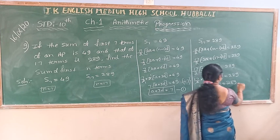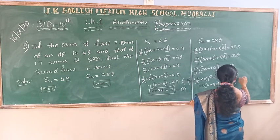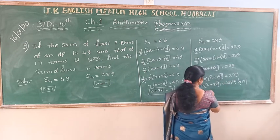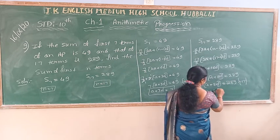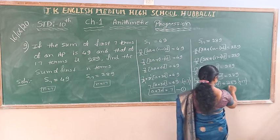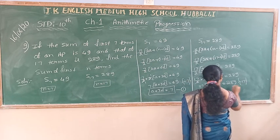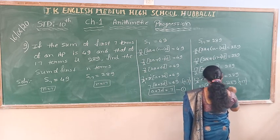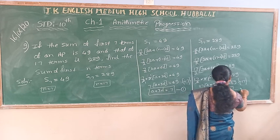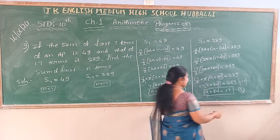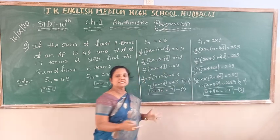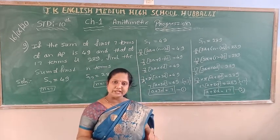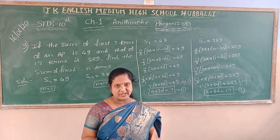So both sides are divided by 17, giving A plus 8D is equal to 289 divided by 17, which is 17. Call this equation number 2. Now I am going to solve this two-variable system by eliminating one of the variables to find the other variable's value.